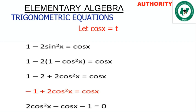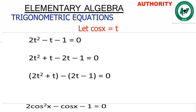Let's substitute: let cos x equal t. That means anywhere we see cos x, we replace it with t. So cos²x becomes t², and cos x becomes t. We now have: 2t² minus t minus 1 equals 0.